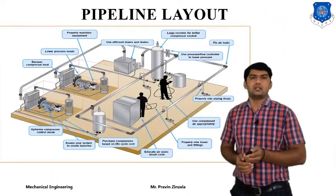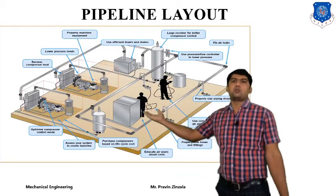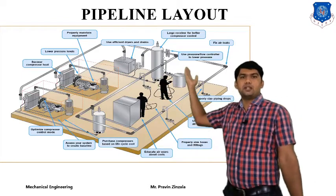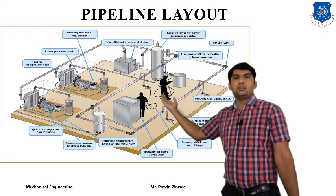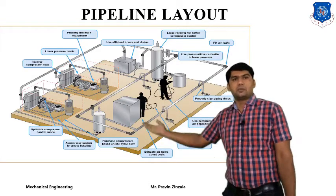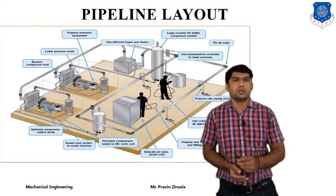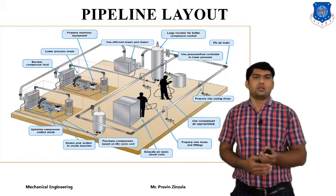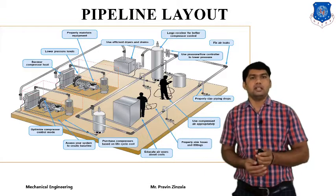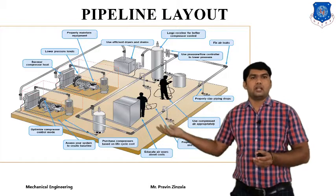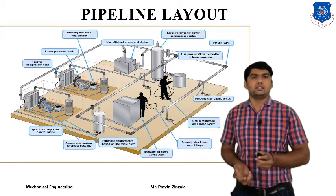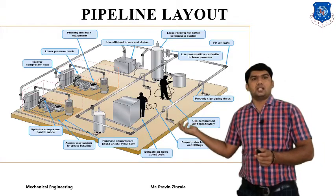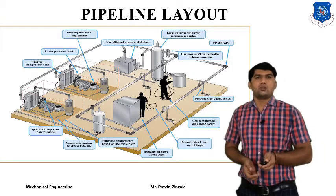The second example is another industrial example. Here they utilize two compressors to supply pressurized fluid to different components. First, the fluid is passed to the reservoir, then to the main line, from the main line to the sub-line, and from the sub-line to different compartments. By utilizing different compartments, we can use this fluid for particular requirements and operations such as drilling, boring, or grinding. These applications can be performed by different layouts of pipeline.